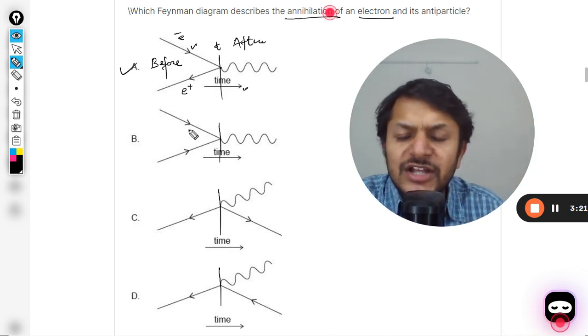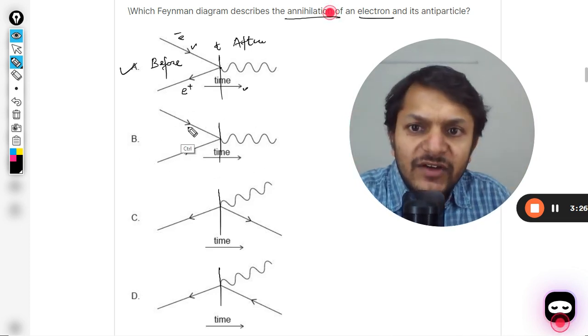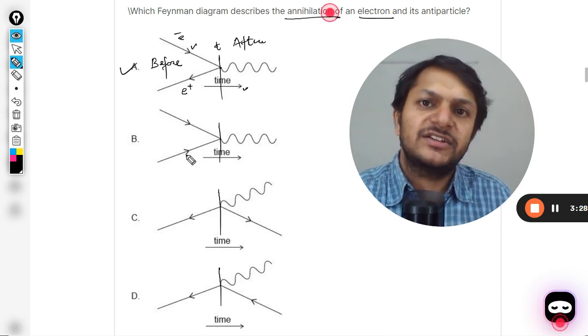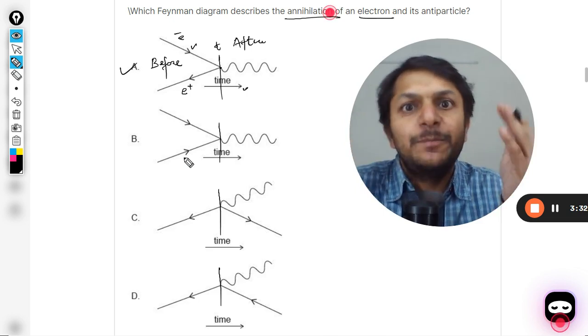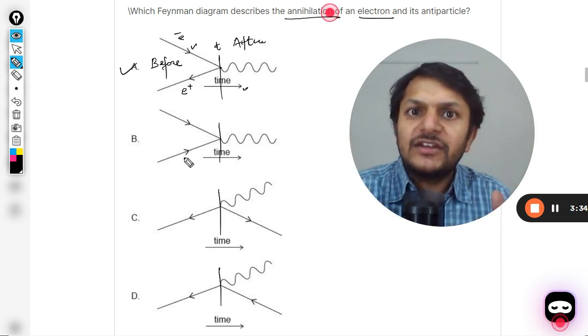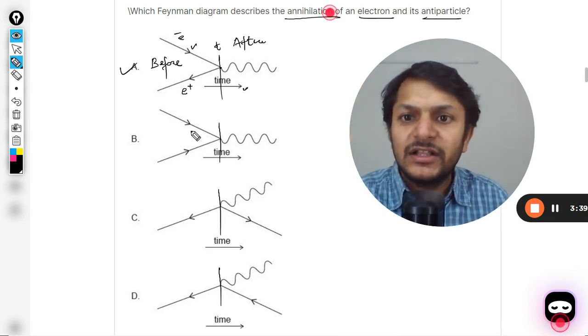Let us think about the other things now. Here in B you see what is happening. Time direction is towards right, even this direction is towards right, even this direction is towards right. It means both of these particles are actually particles. None of it is antiparticle, but the question clearly wants to say we want to discuss antiparticle. There is no antiparticle here. Hence B is wrong.